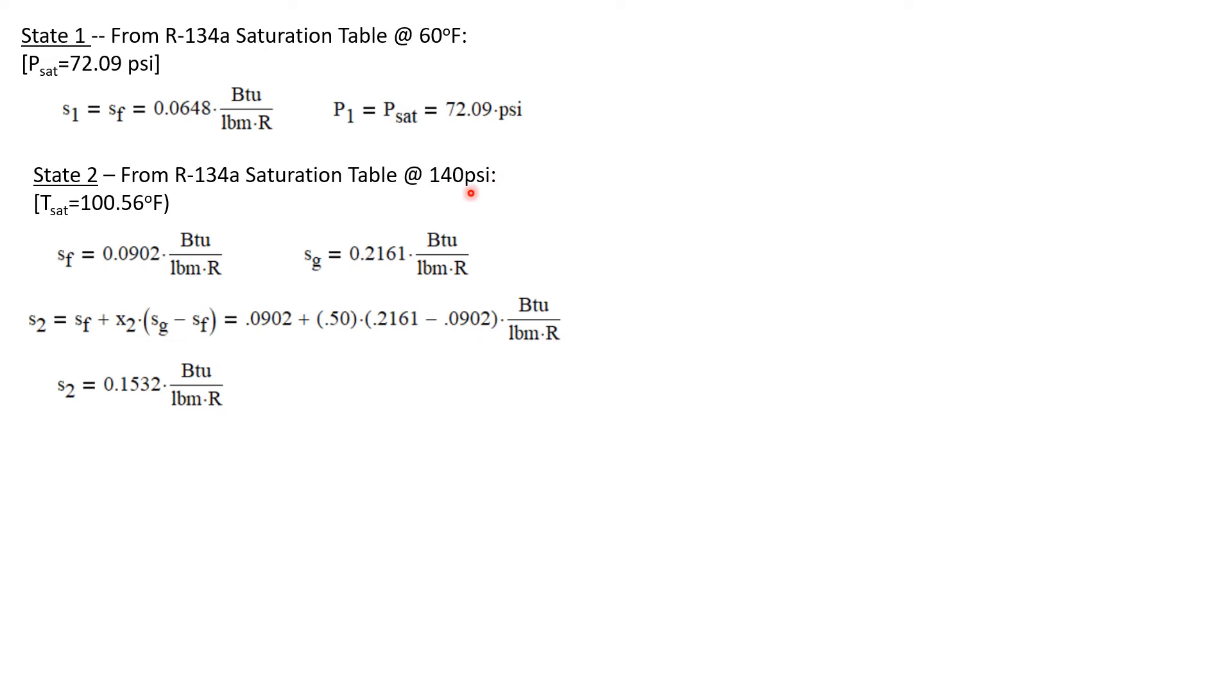Now for state two we'll use the same 134a saturation table but we'll be looking at the row that's 140 psi. Now at this pressure the saturation temperature is 100.56°F and we're going to snag values for s_f and s_g since state two is a saturated mixture.